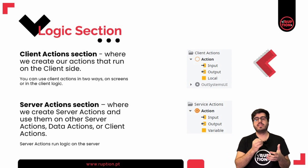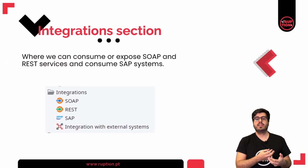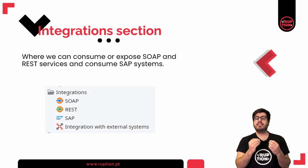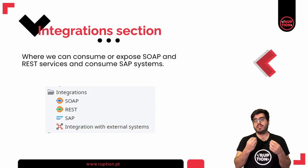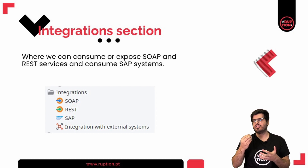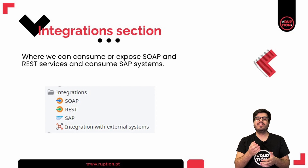For example, on server actions, since we are running logic on the server, this allows us to use aggregates to fetch information from the database — something that direct client actions do not allow us to do natively. We also have the Integration section. This is where we can consume or expose SOAP and REST services and consume SAP systems. This is one of the most important accelerators from OutSystems, since OutSystems generates all the methods and data structures when consuming a service, giving developers a seamless experience when integrating them, with almost no visual differences in the application logic. If you're also exposing a service, you have integrated documentation, making it easier for consumers of your API to have all the information available.